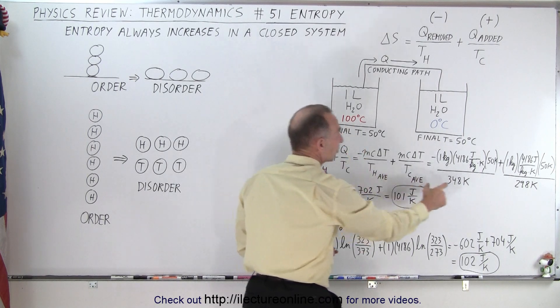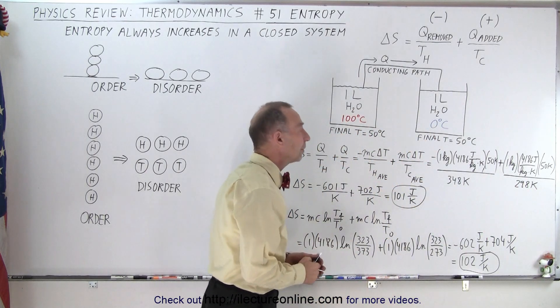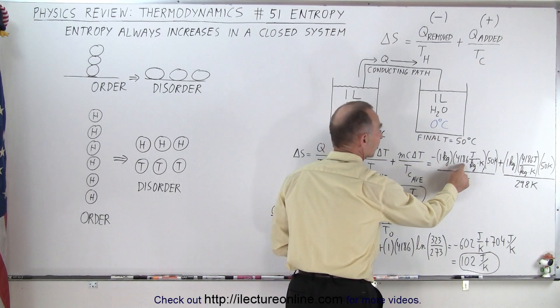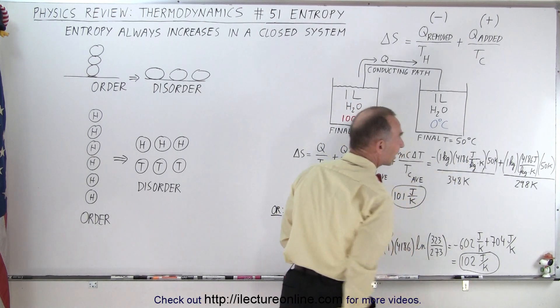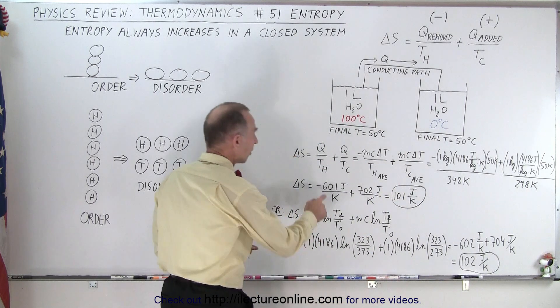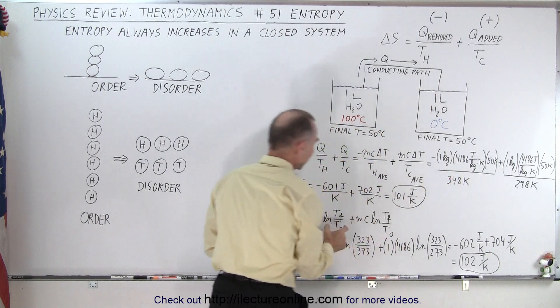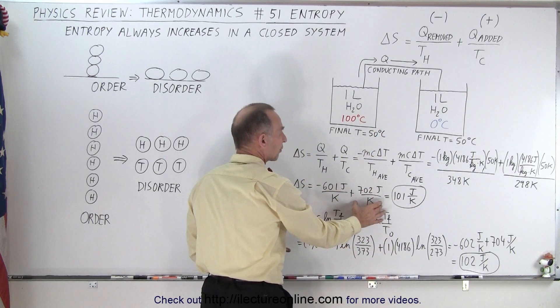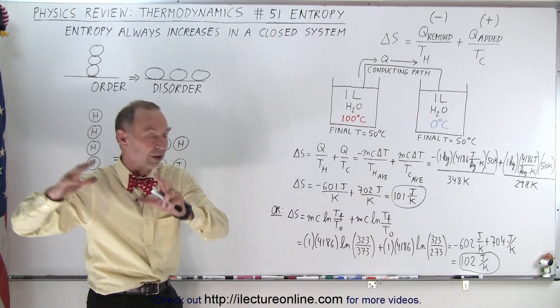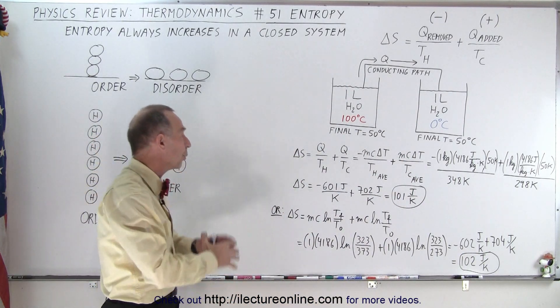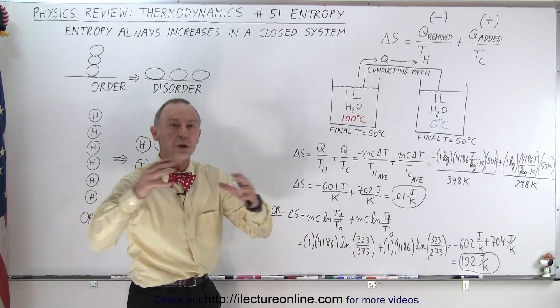75 Celsius, the average is 348. 25 Celsius, the average is 298 Kelvin. We have one kilogram times the 4186 joules per kilogram per Kelvin times the change in 50 Kelvin. And notice that is minus 601 joules per Kelvin for the left side and plus 702 joules per Kelvin for the right side. When you add them together, you get a positive quantity. Regardless of what happens when you transfer heat from one place to another, you always end up with a positive delta S in a closed system.